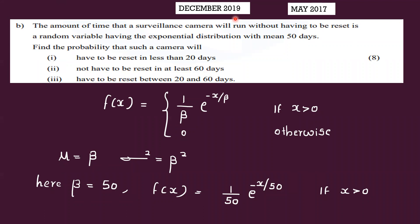The amount of time is a random variable having the exponential distribution. We want to find the probability that the camera will have to be reset in less than 20 days, and the probability density function for the exponential distribution is f(x) = (1/beta) * e^(-x/beta), if x is greater than 0, and 0 otherwise.